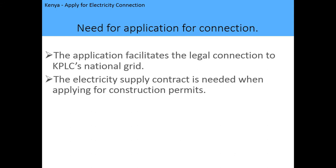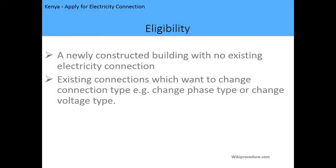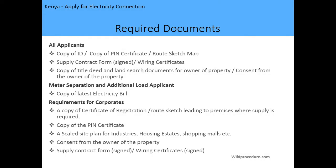An electricity supply contract is also needed when applying for construction permits. The eligibility is as follows: a newly constructed building with no existing electricity connection is eligible to apply. Existing connections that want to change the connection type — for example, changing the phase type or the amount of voltage — can also apply for an electricity connection.